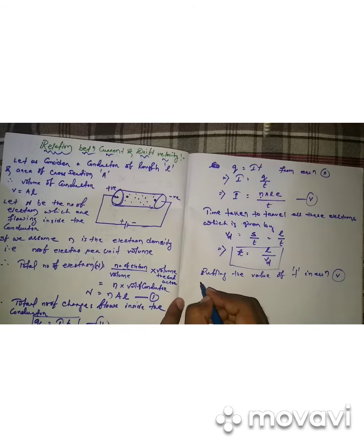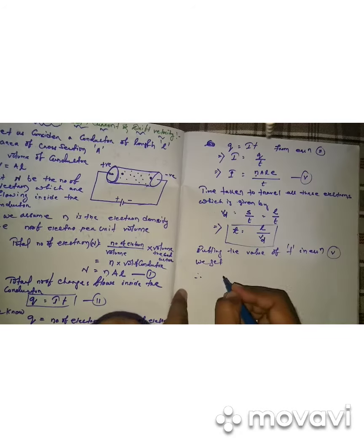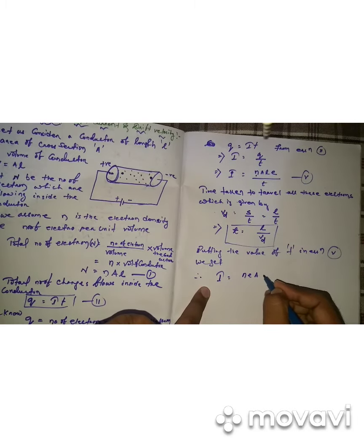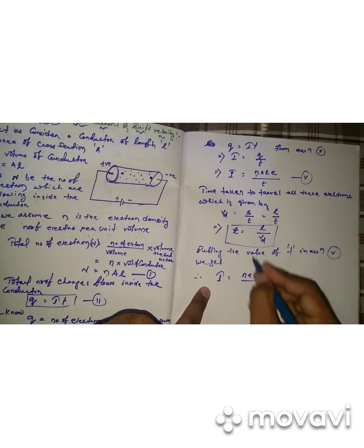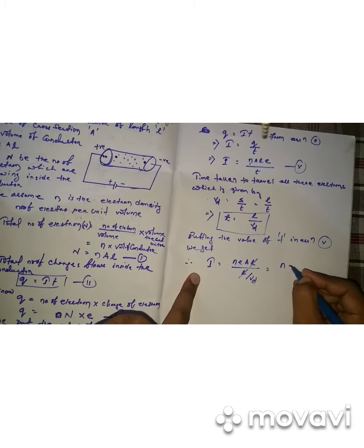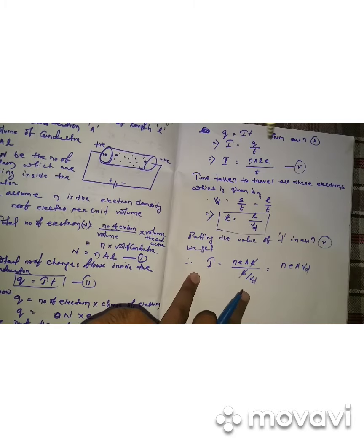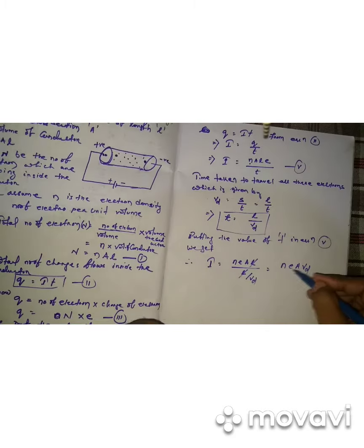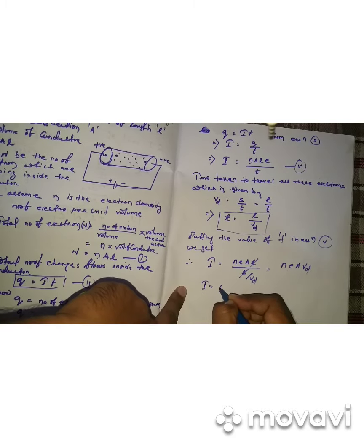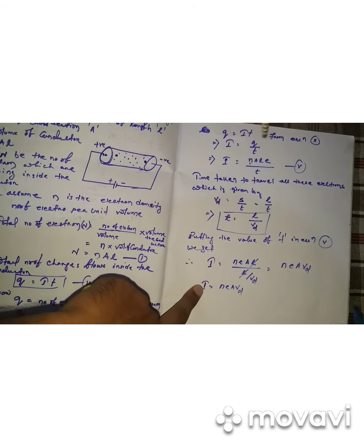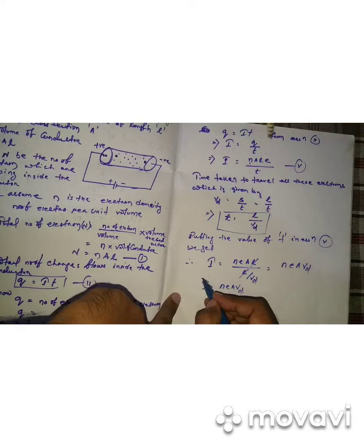We substitute the value of t into the equation. Therefore, I equals nALe divided by t, and t equals L divided by Vd. So I equals nALe divided by (L/Vd), and L cancels out, giving I equals nAeVd. This is the relation between electric current and drift velocity.